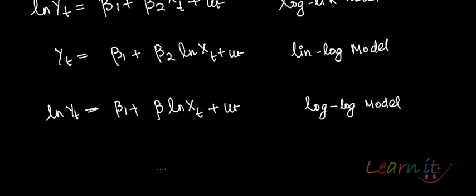You might also have the model such as yt equals beta 1 plus beta 2, 1 upon xt plus ut. This is called reciprocal model.